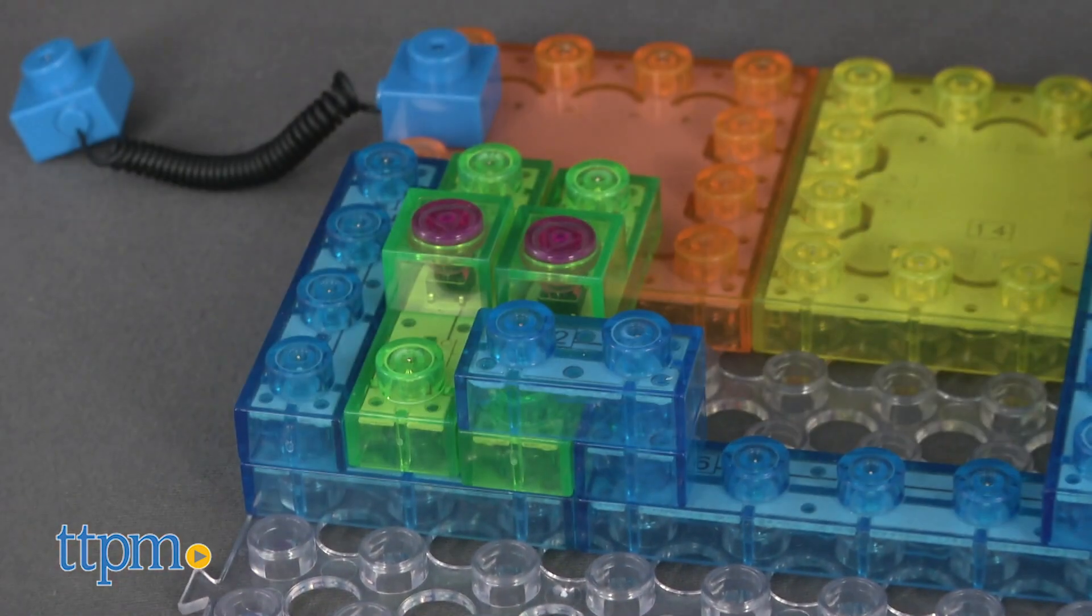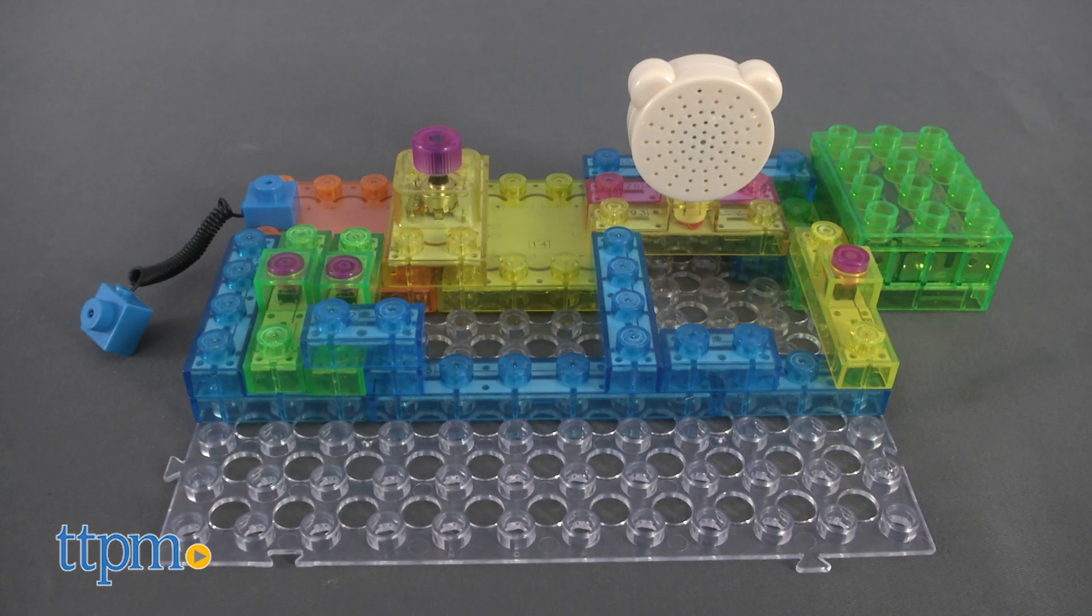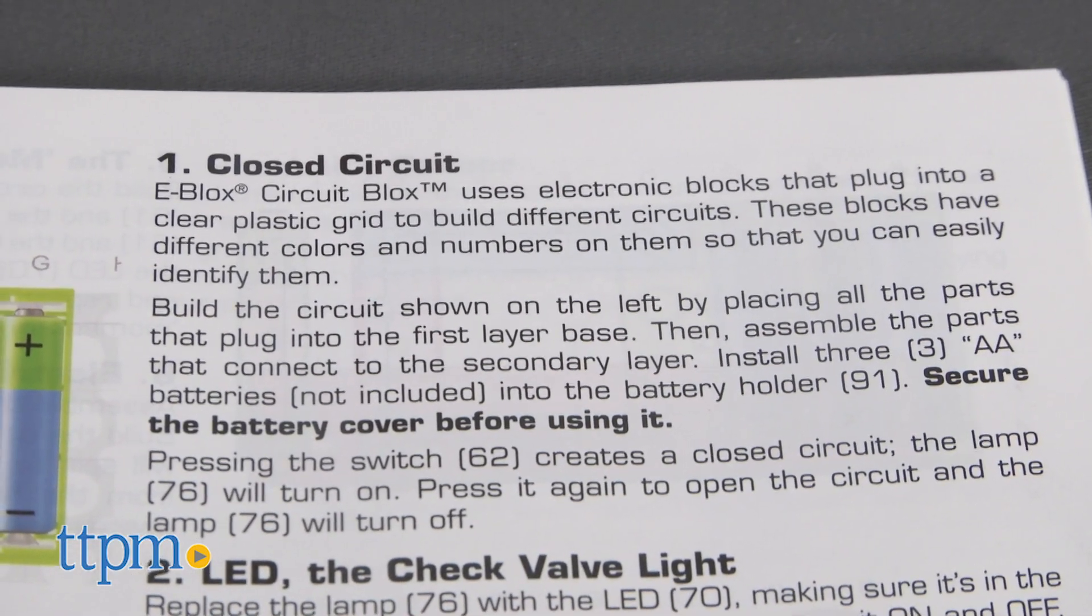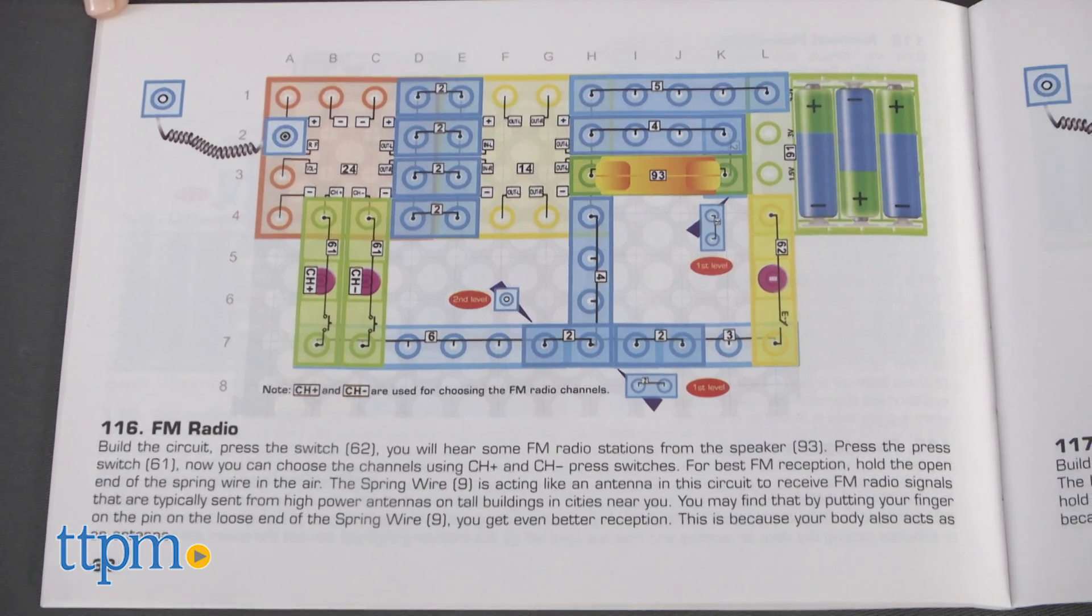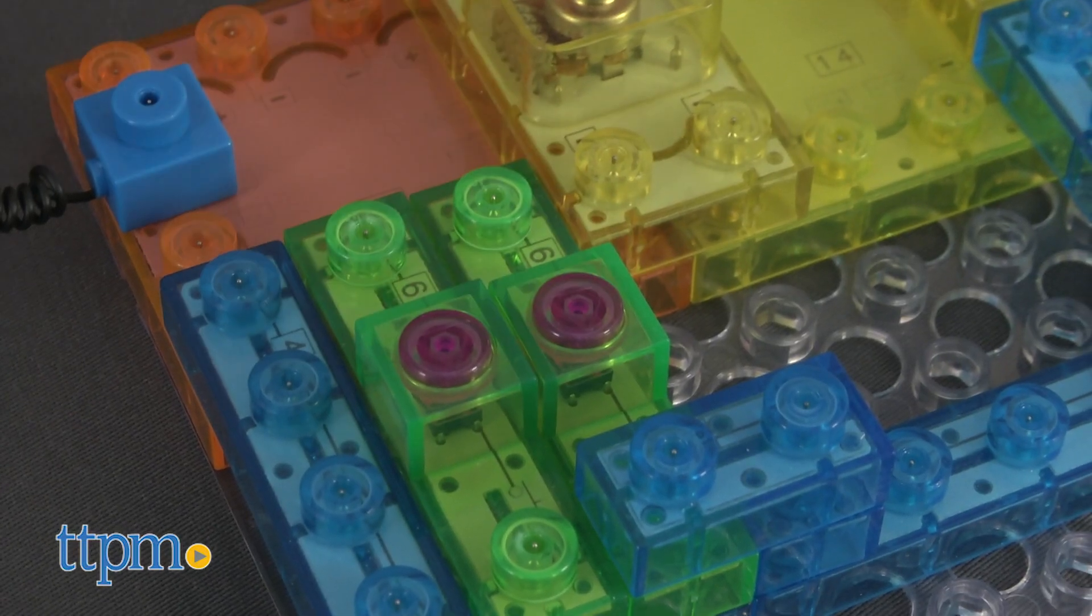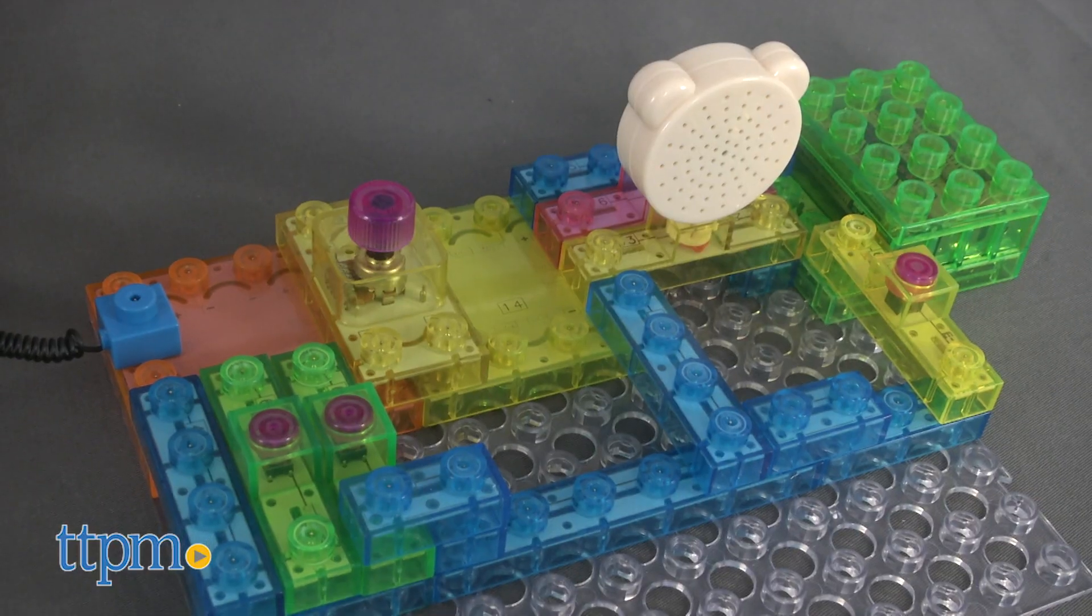The main build in the 49-piece CircuitBlox 120 kit is a real working FM radio. However, the instructions start kids off with the basics of electricity through smaller and easier builds. As kids progress through the different builds, they'll add more blocks and more features until they're ready to tackle the radio build.